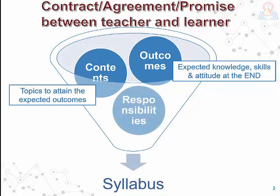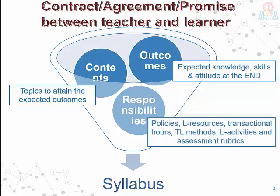The third component is the responsibilities of the stakeholders. That involves the policies, the learning resources, transactional hours, teaching learning methods, learning activities, and the assessment rubrics. So outcomes, contents, and responsibilities together form a syllabus. A syllabus must have all three of these components.